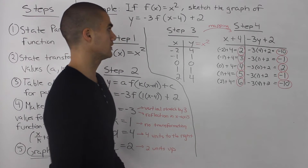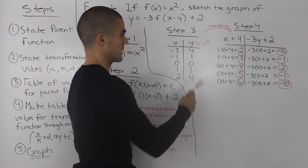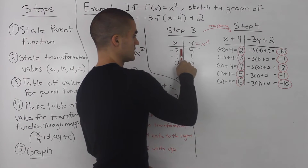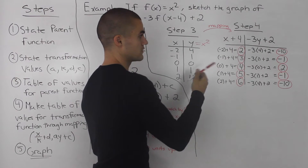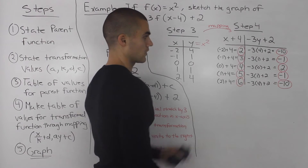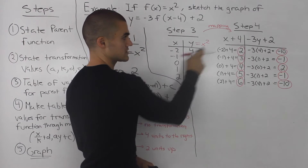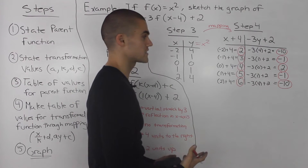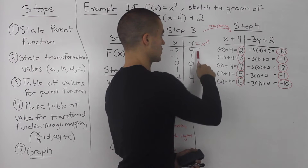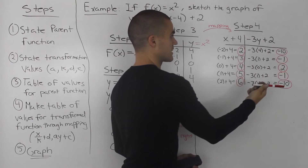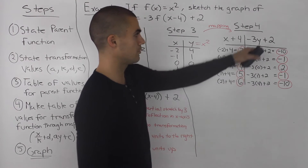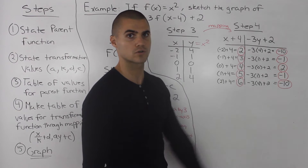Now we apply the mapping formula to each coordinate. For example, negative 2 plus 4 gives new x equals 2. Negative 1 plus 4 gives 3, 0 plus 4 gives 4, and so on — each x coordinate is shifted by adding 4. For the y values, using negative 3y plus 2: negative 3 times 4 plus 2 gives negative 10; negative 3 times 1 plus 2 gives negative 1, and so on.